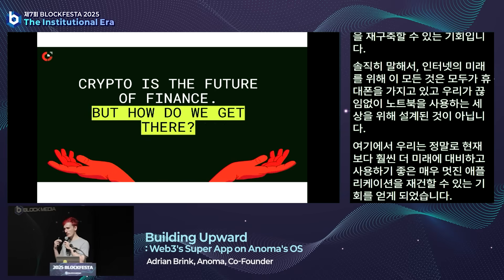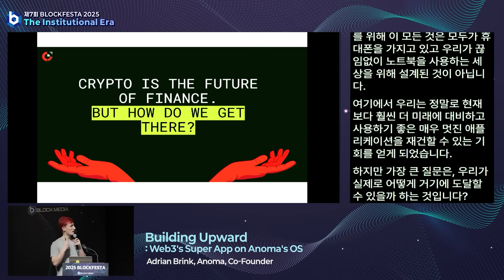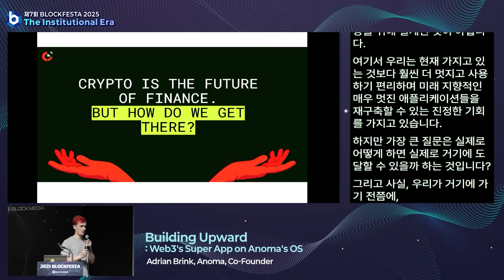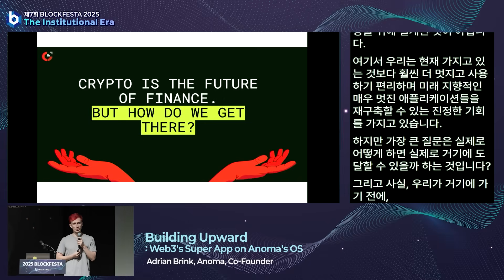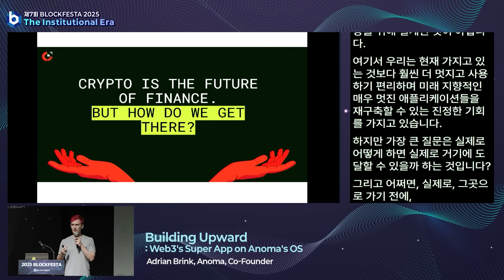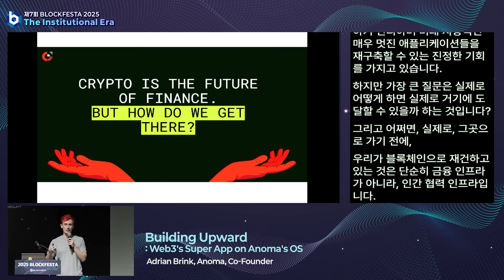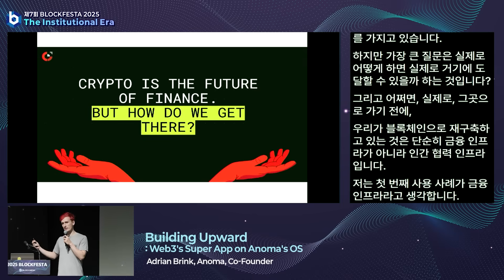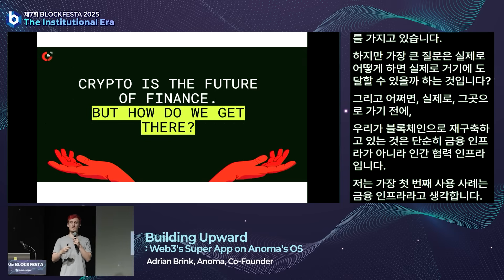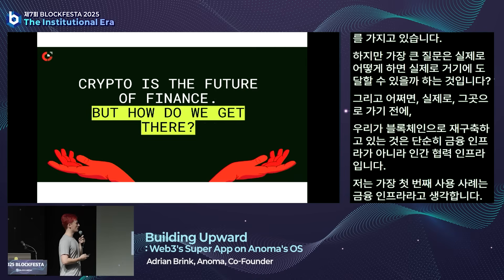Before we go there—it is not just financial infrastructure that we're rebuilding here with blockchains, but rather human coordination infrastructure. The very first use case is financial infrastructure, but long-term it's fundamentally human coordination: how do humans coordinate at scale with things like AI agents?